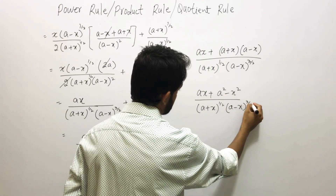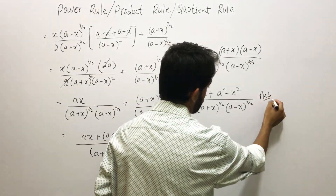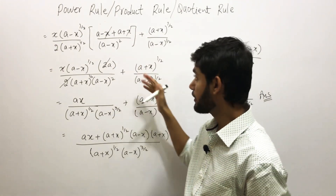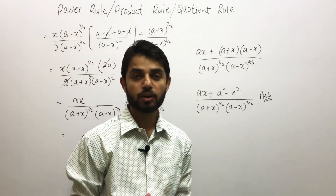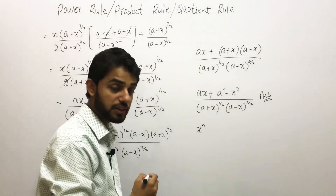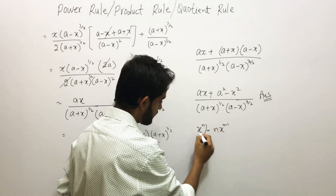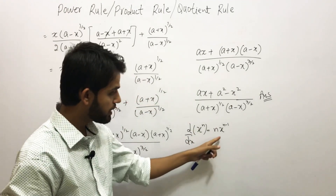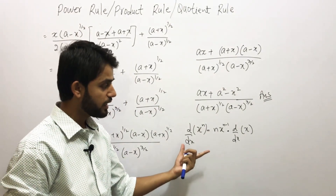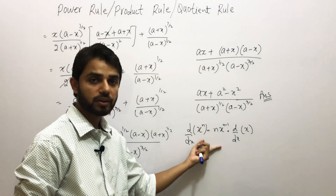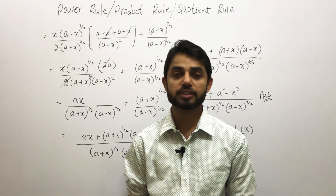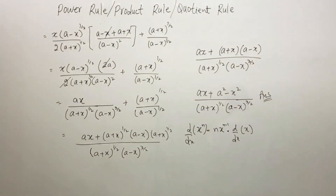This is how we apply the product rule, power rule, and quotient rule all together. The key trick is: when you have a term like x^n and you apply the power rule, don't forget to also take the derivative of the inner term. That is the area where most students make mistakes. I hope this video is very helpful. Please don't forget to subscribe, share, and comment below. Thank you.